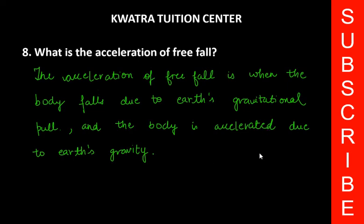What does earth do? It is gravity. The body accelerates because of gravitational force. Gravitational force acts downward — that is the gravitational pull. So the acceleration of the body is downwards, accelerated due to earth's gravity, and this fall is known as free fall.